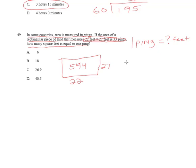Okay, well that means that 33 pings is equal to 594 square feet. So what do you do next? All you do is divide 33 pings into 594 square feet, and that is going to give you 18 square feet.